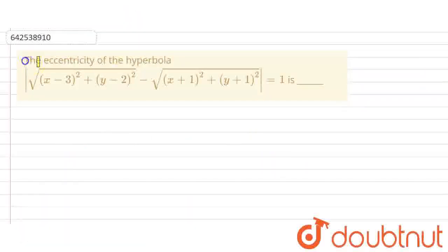Hello everyone, our question is to find the eccentricity of the hyperbola: √[(x-3)² + (y-2)²] - √[(x+1)² + (y+1)²] = 1.